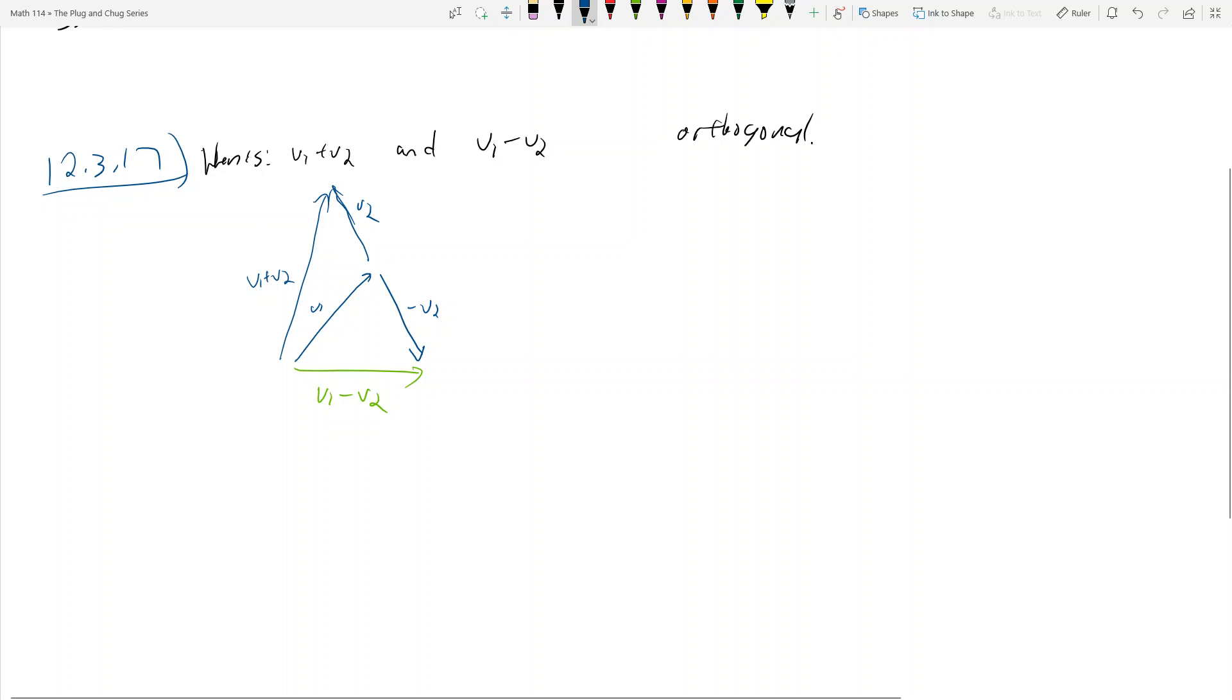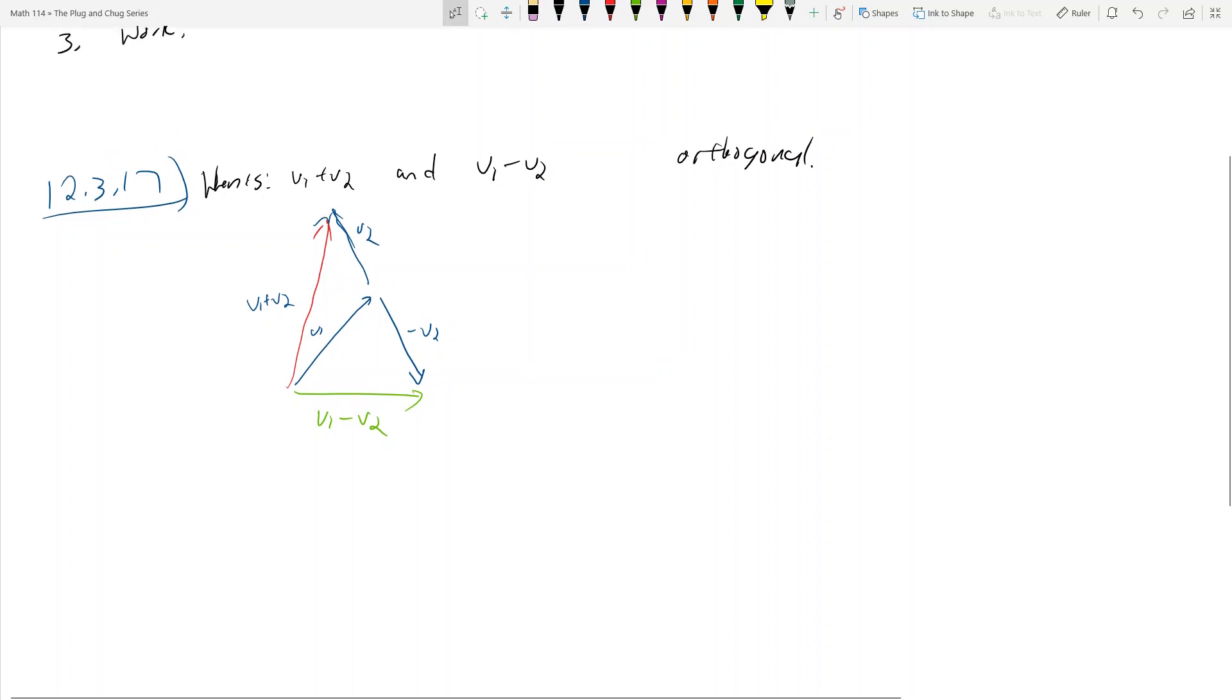We want to see if V1 plus V2 and V1 minus V2 are orthogonal. What does orthogonal mean? Orthogonal means that the angle between them is going to be a 90 degree angle. They're going to be perpendicular to each other. And how do we show this is true? We know two vectors are orthogonal when their dot product is zero. So what do we want to do? We want to take the dot product of V1 plus V2 dotted with V1 minus V2 and see when that is zero.